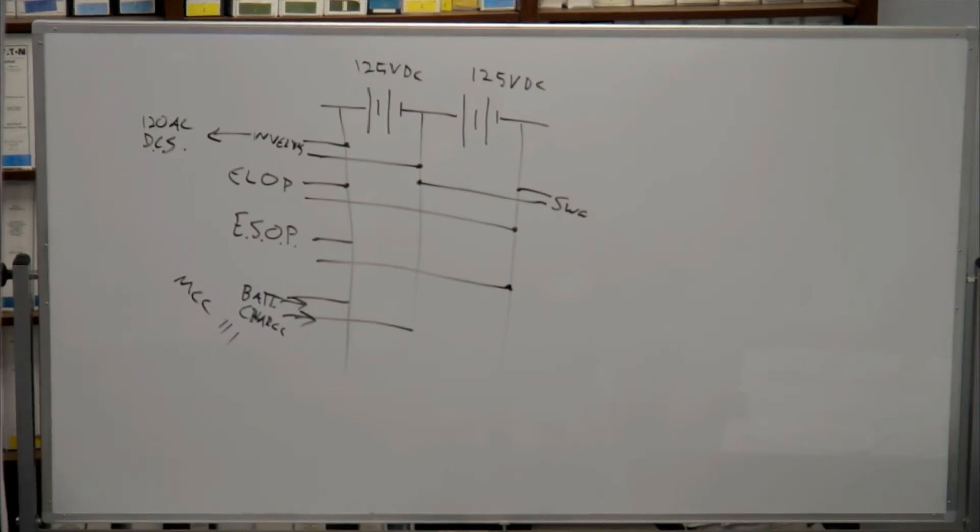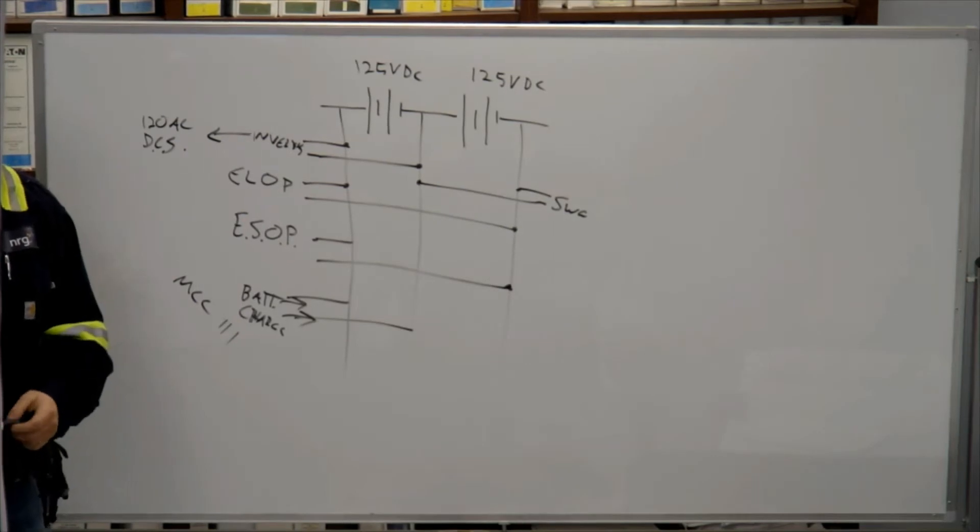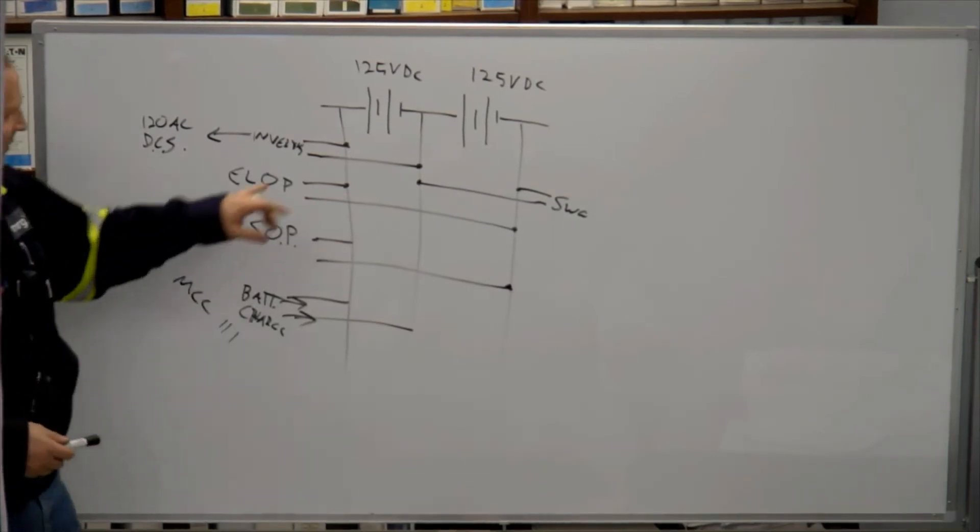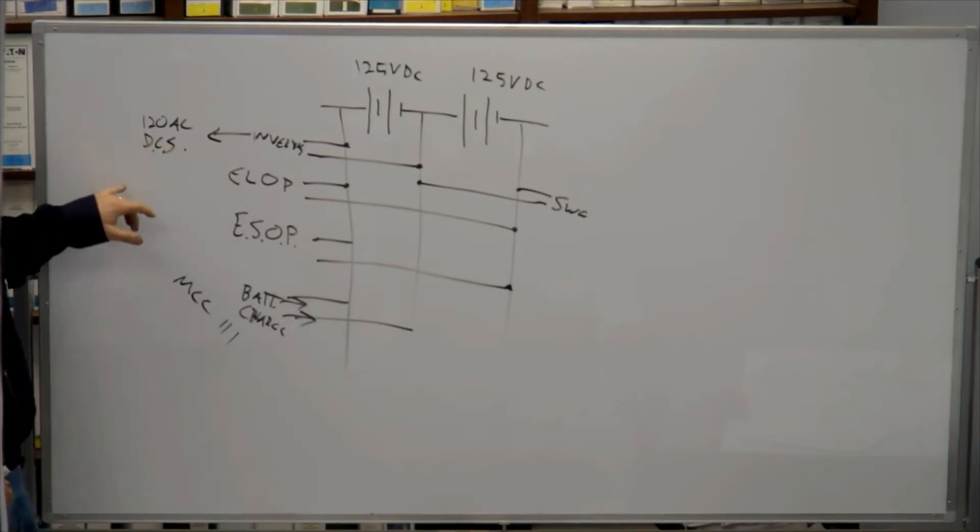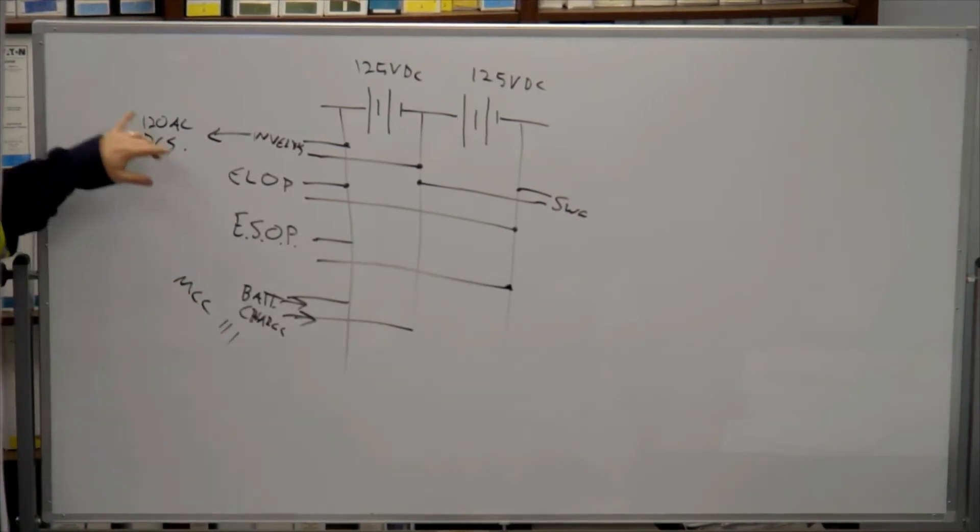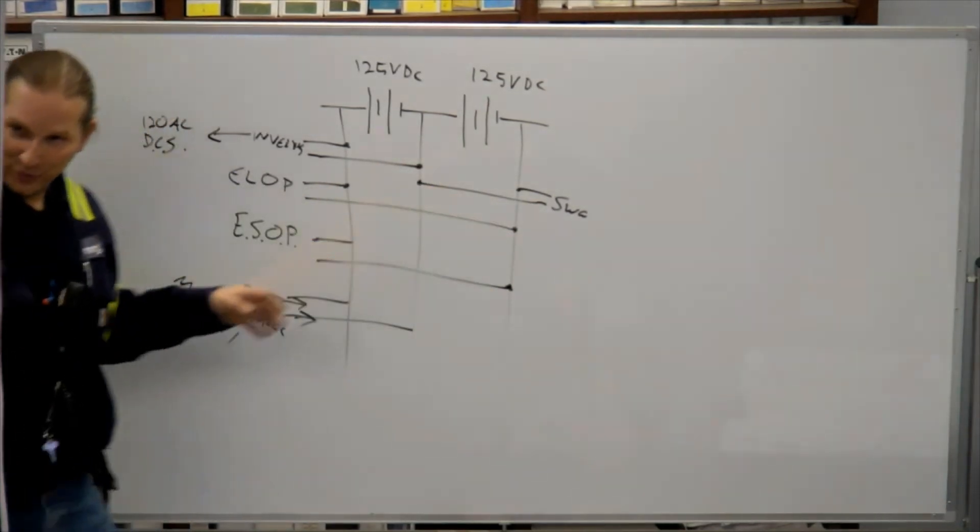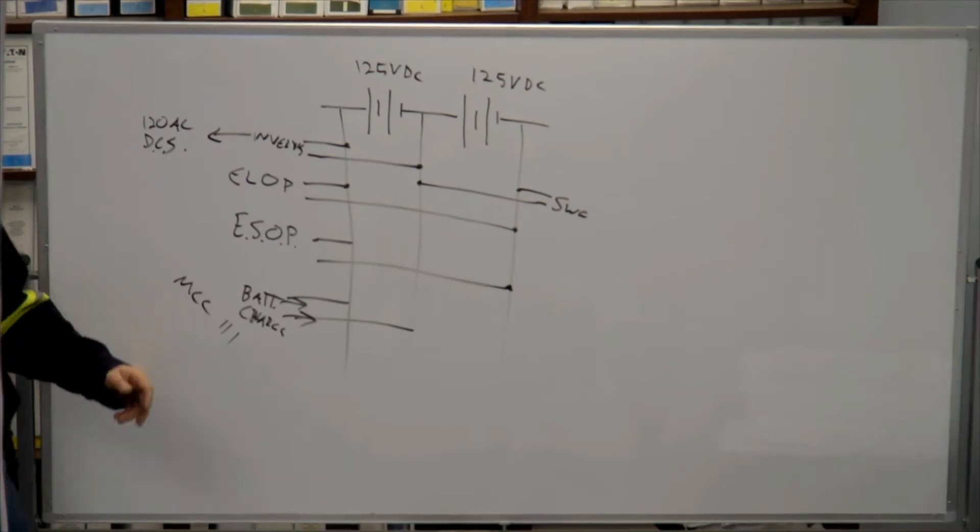I mean they take DC and they make 120 volt AC that is super reliable. And we've got two of them. We've got two inverters and they both go into the same header, same wiring pattern.